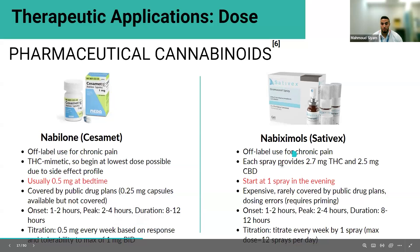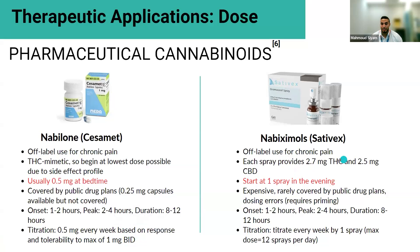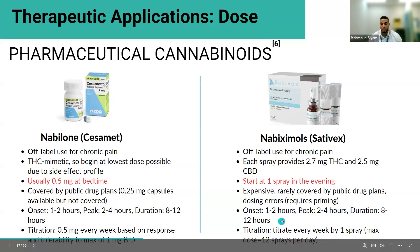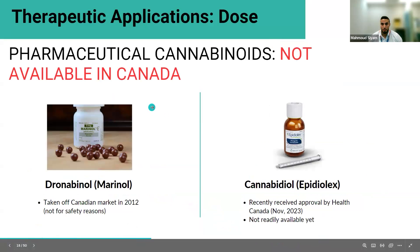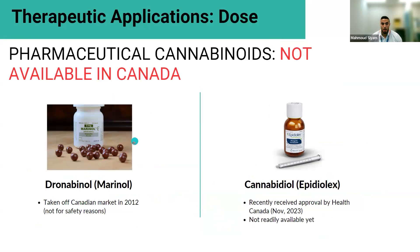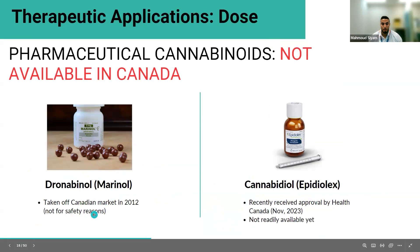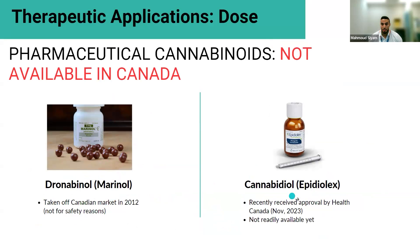Sativex is a pharmaceutical-grade product with roughly a one-to-one ratio of CBD and THC in an oral mucosal spray. It's not commonly used for chronic pain because it's very expensive, hard to dose due to a priming requirement that can lead to dosing errors, and not readily covered by public drug plans. Onset, peak, and duration are similar to nabilone, and titration goes to a maximum of 12 sprays per day. Other pharmaceutical cannabinoids like Marinol and Epidiolex are not available in Canada — Marinol was taken off the market in 2012, and Epidiolex was approved in late 2023 but is not readily available.